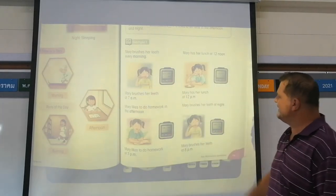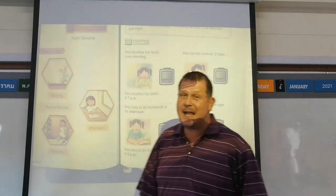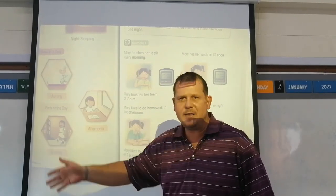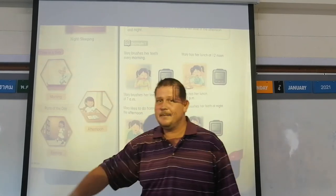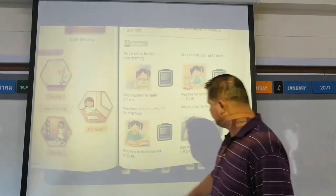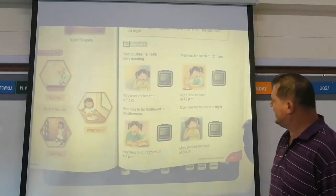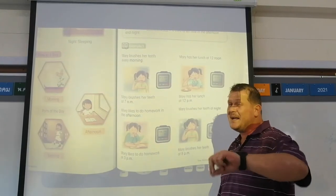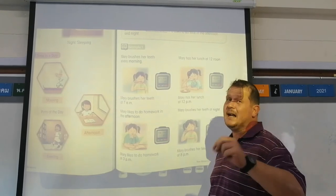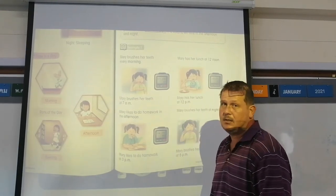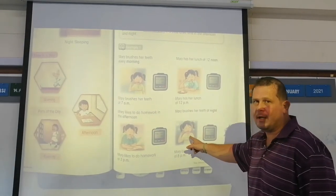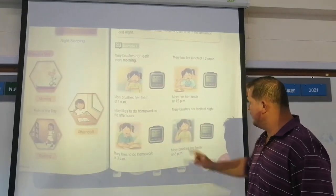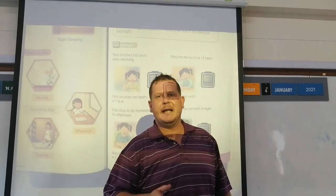Mary brushes her teeth before she goes to bed. Night time — we know it's PM. The clock shows 08:00, but when we use a 24-hour system, 08:00 means morning. We're talking about the evening when she goes to sleep, so Mary brushes her teeth at 8 PM.